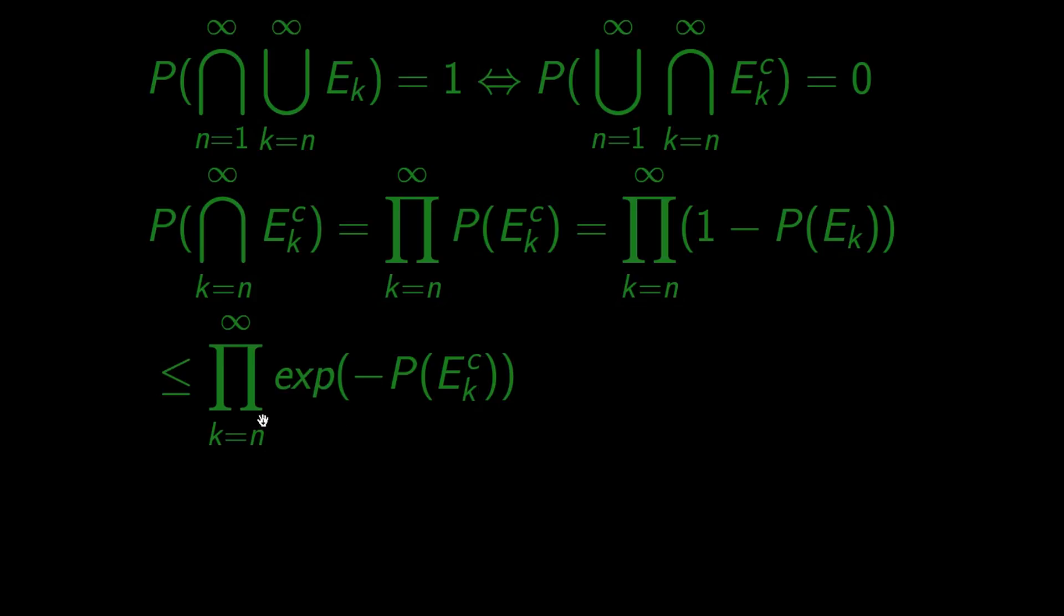And here is why it is useful to use this inequality. The product of exponential functions is the exponential function of the sum. So what is our exponent here? It is the tail of probability series.